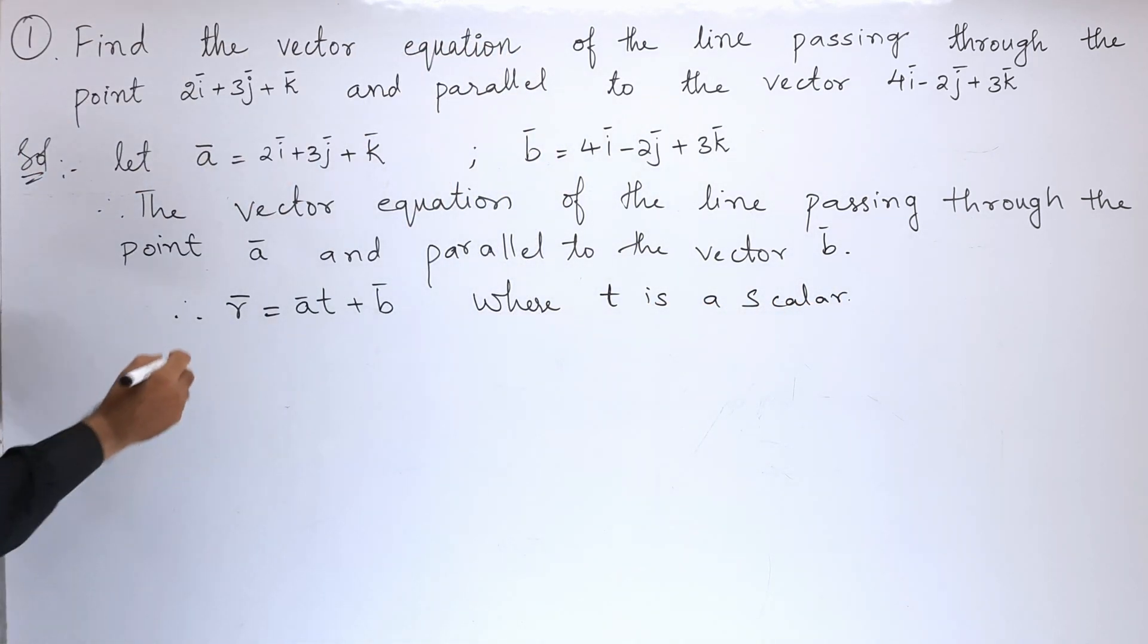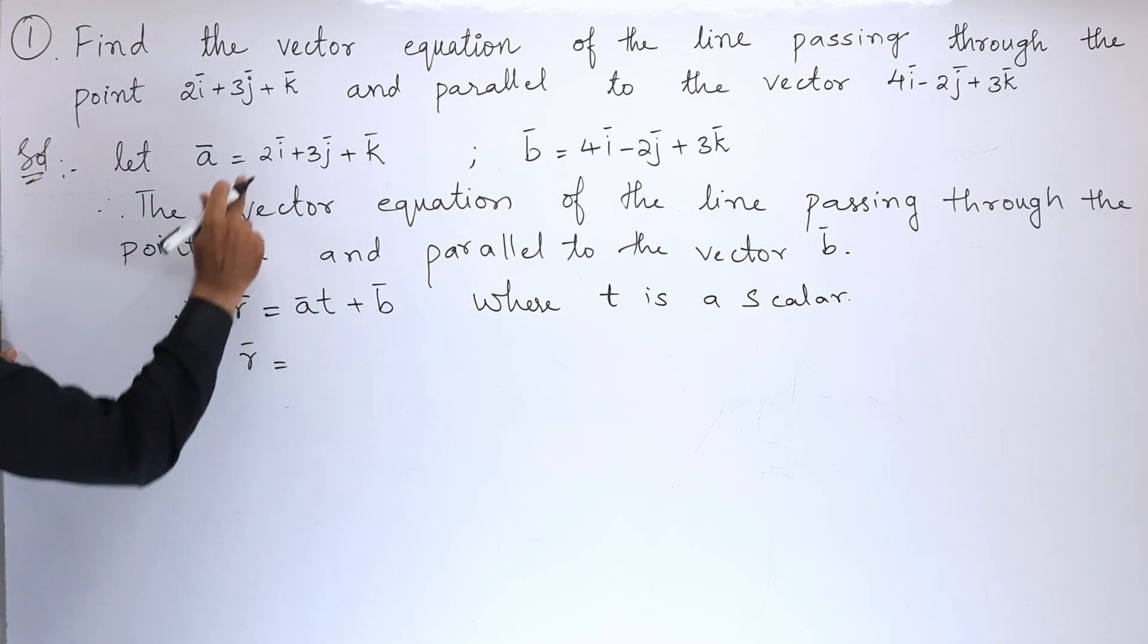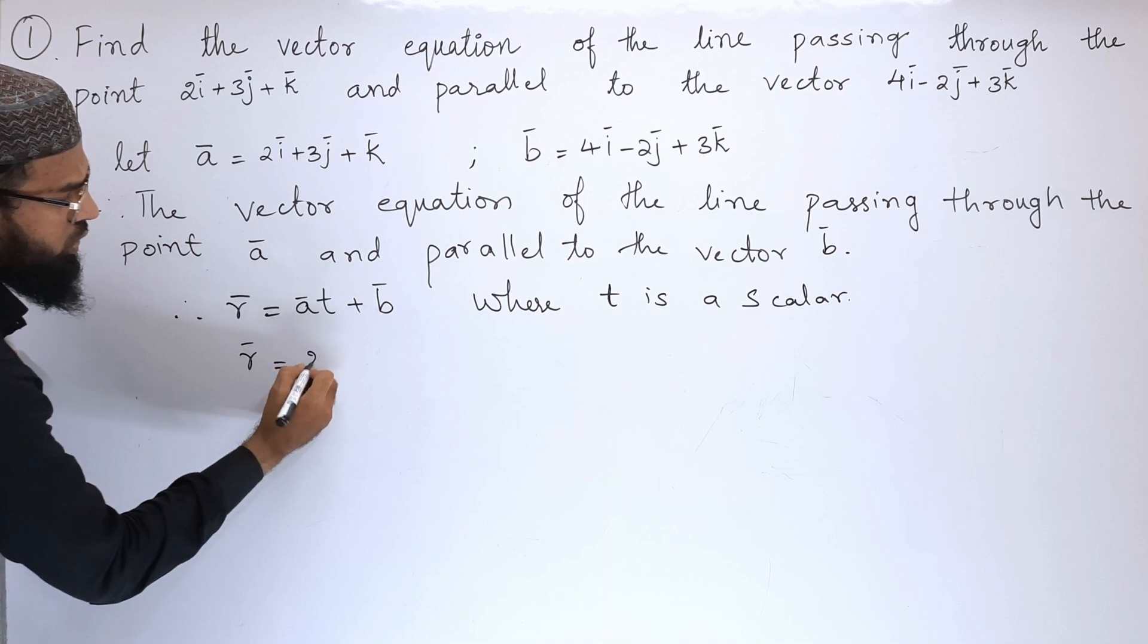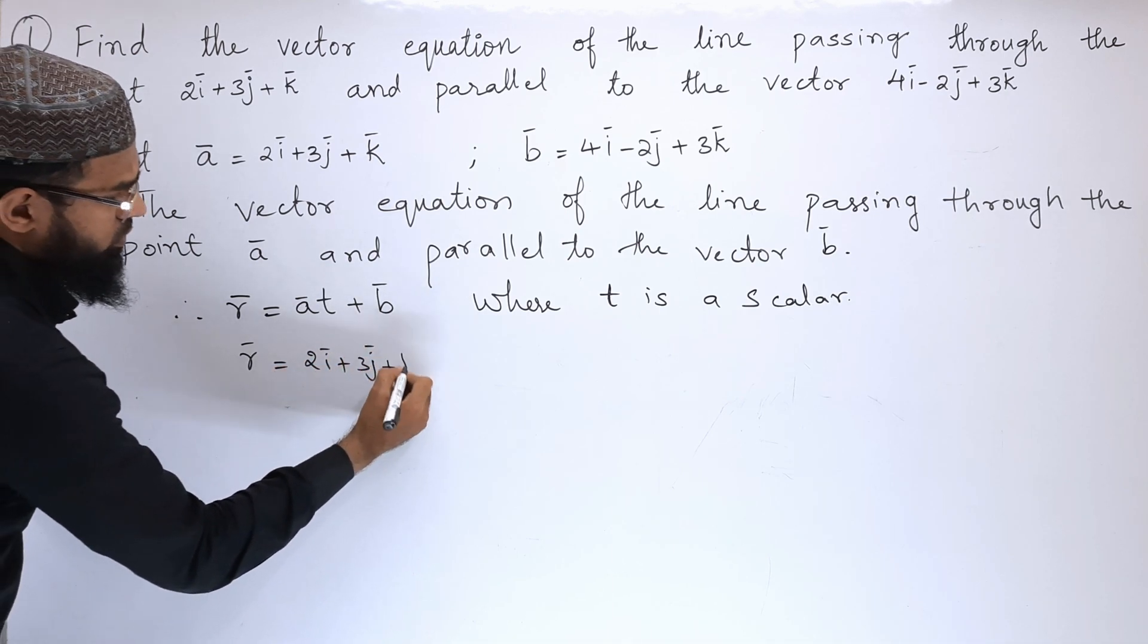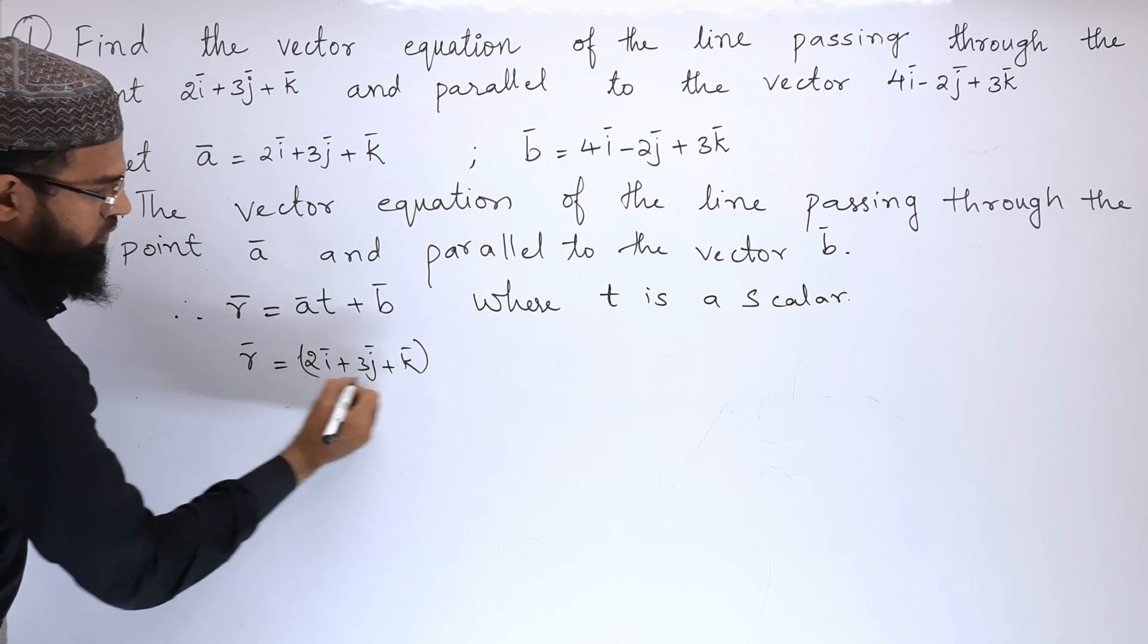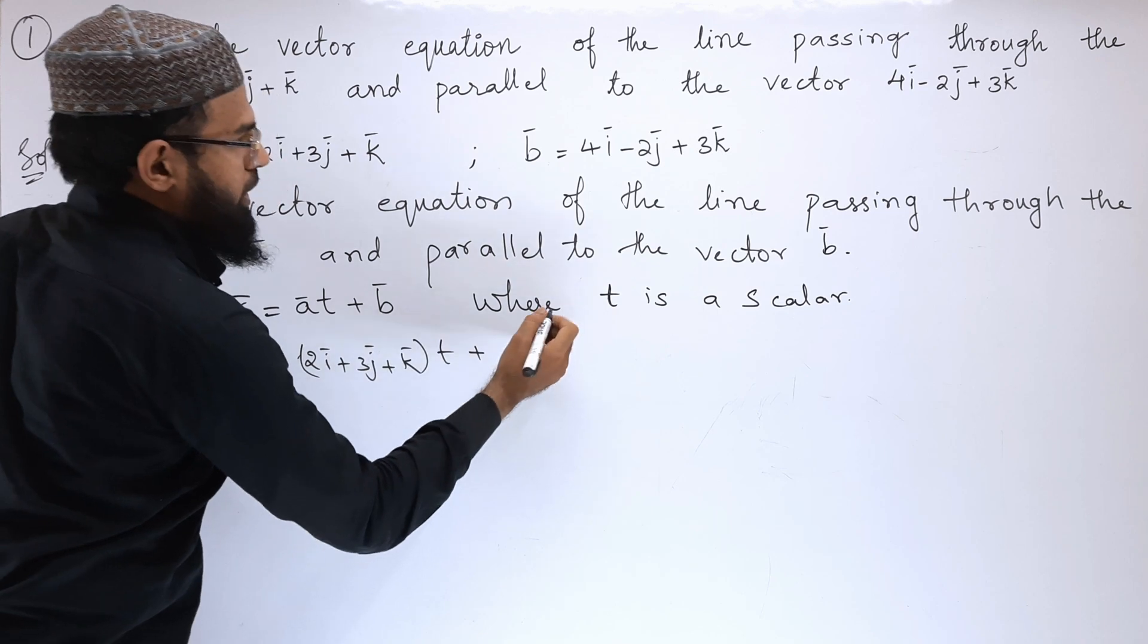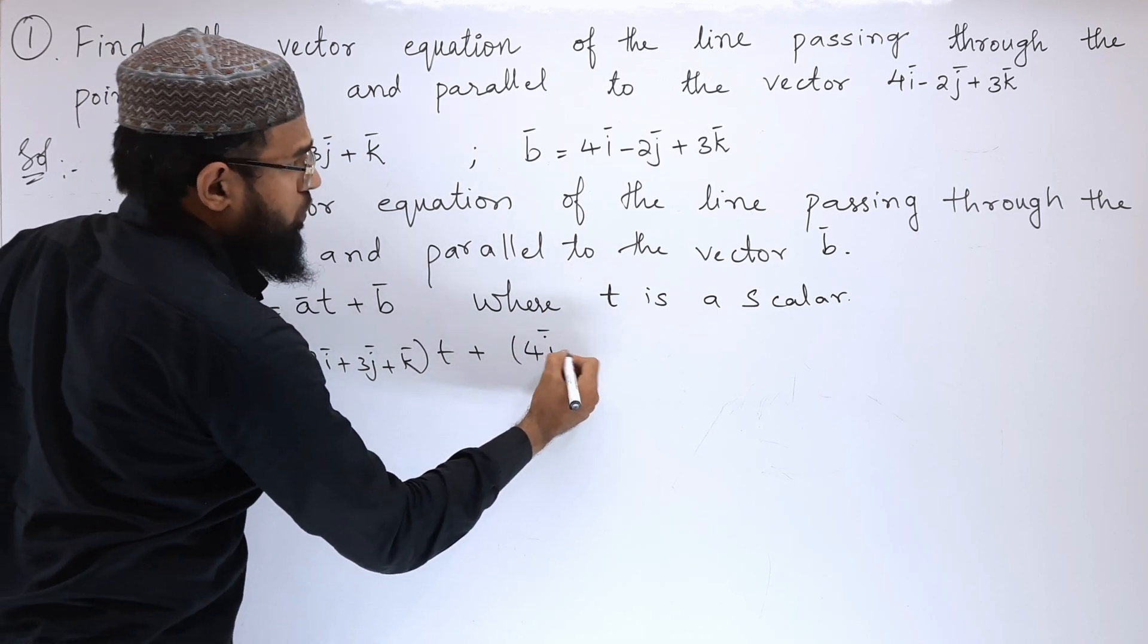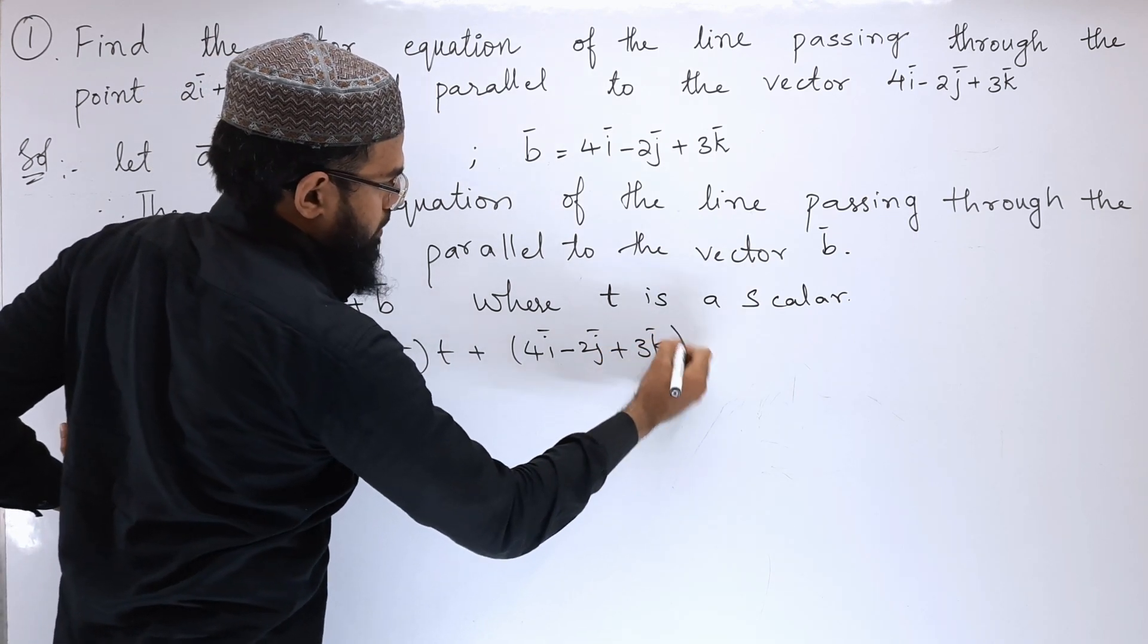Let us substitute. Vector r equals vector a is 2i cap plus 3j cap plus k cap plus t times b. Vector b is 4i cap minus 2j cap plus 3k cap.